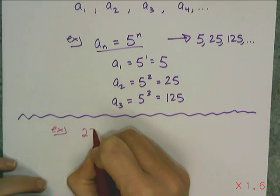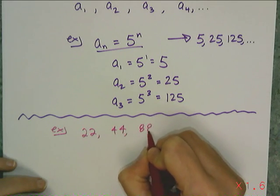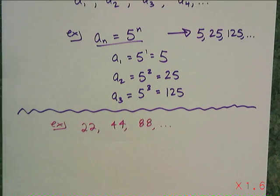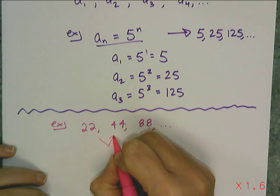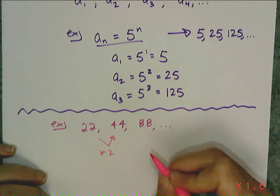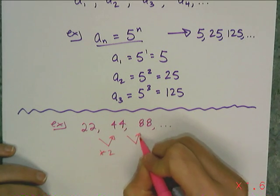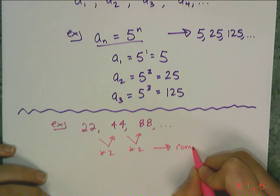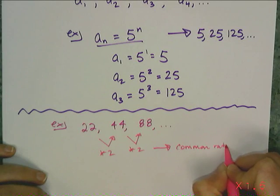Let's look at 22, 44, 88, dot dot dot. First thing I need to know is I need to know if it's geometric, which means I have to find a common ratio. So if I look at this, 22 times 2 gives me 44. 44 times 2 gives me an 88. That tells me that there is the common ratio of 2.